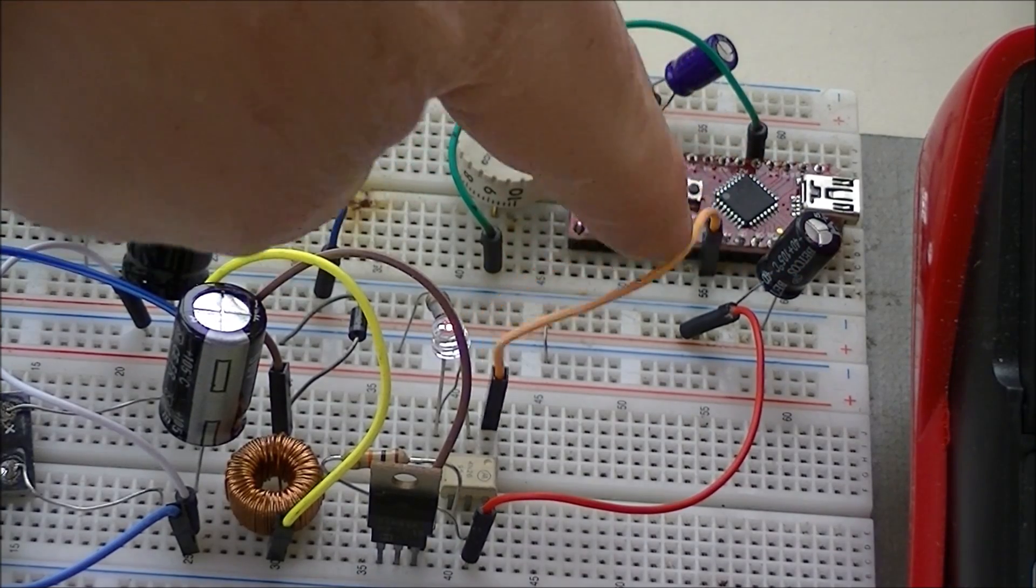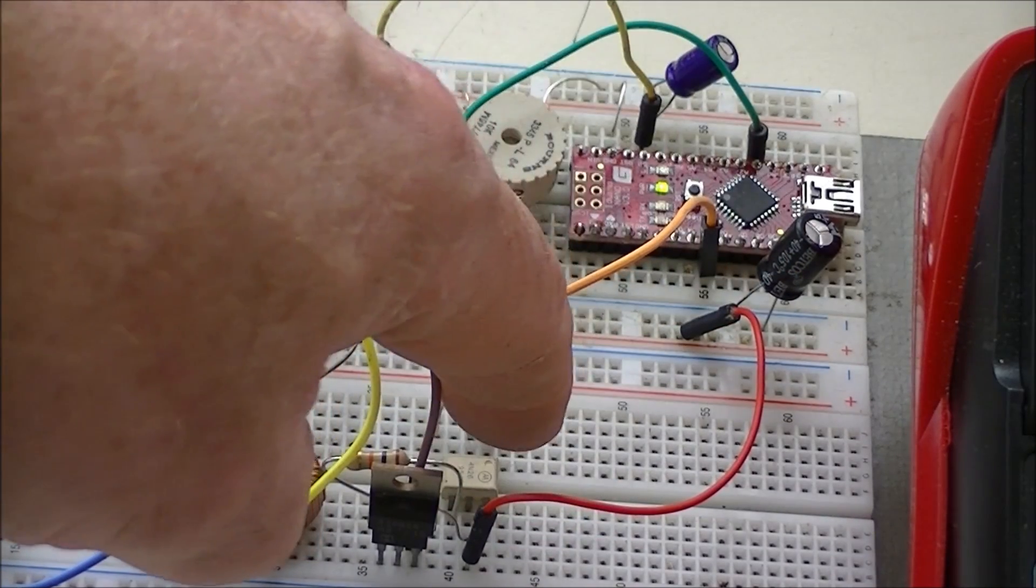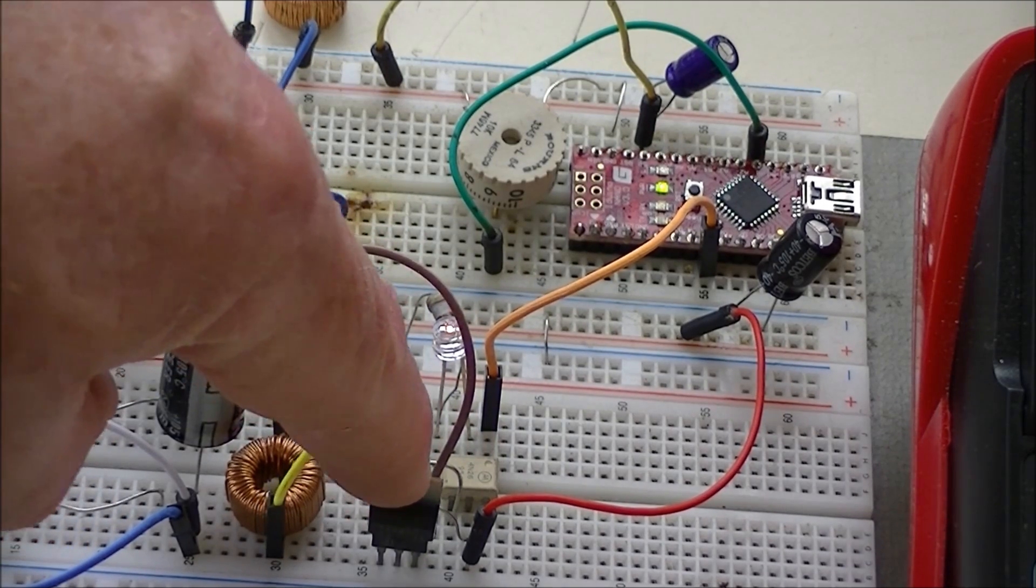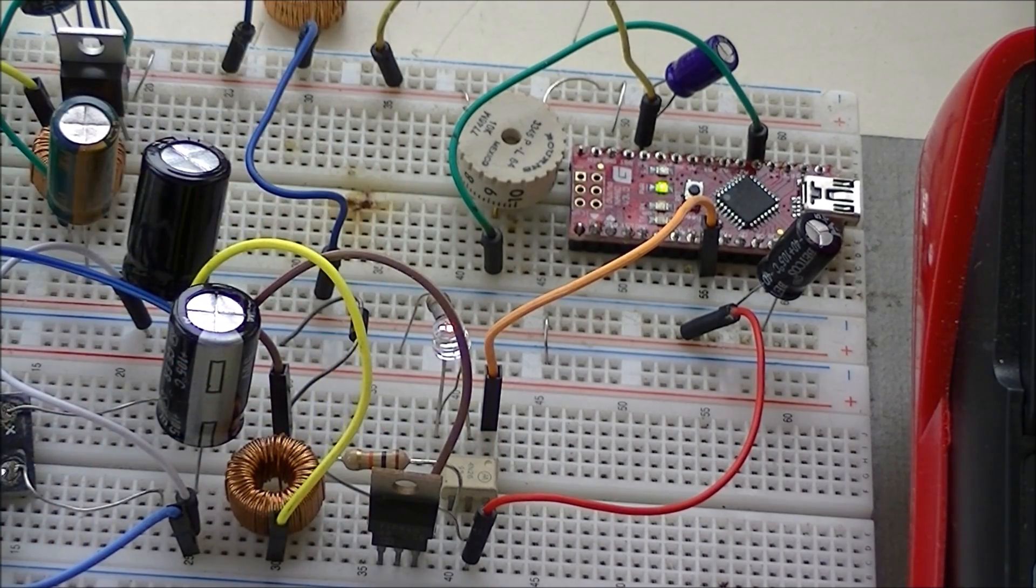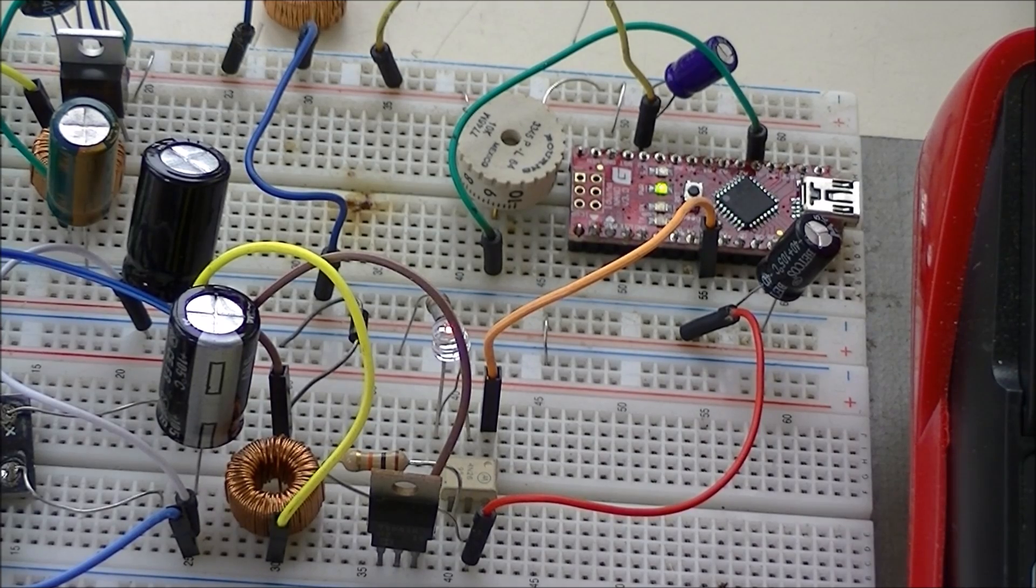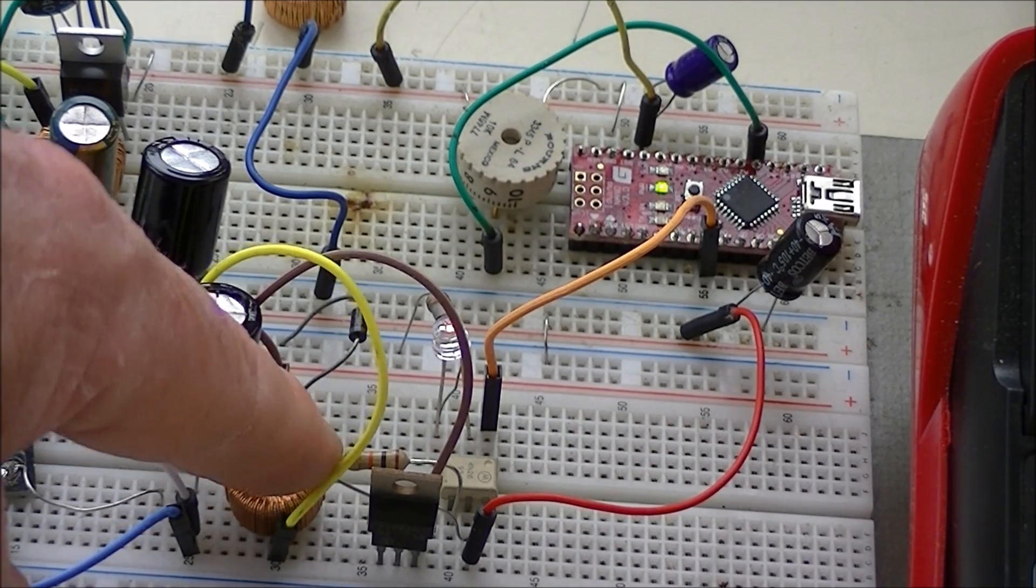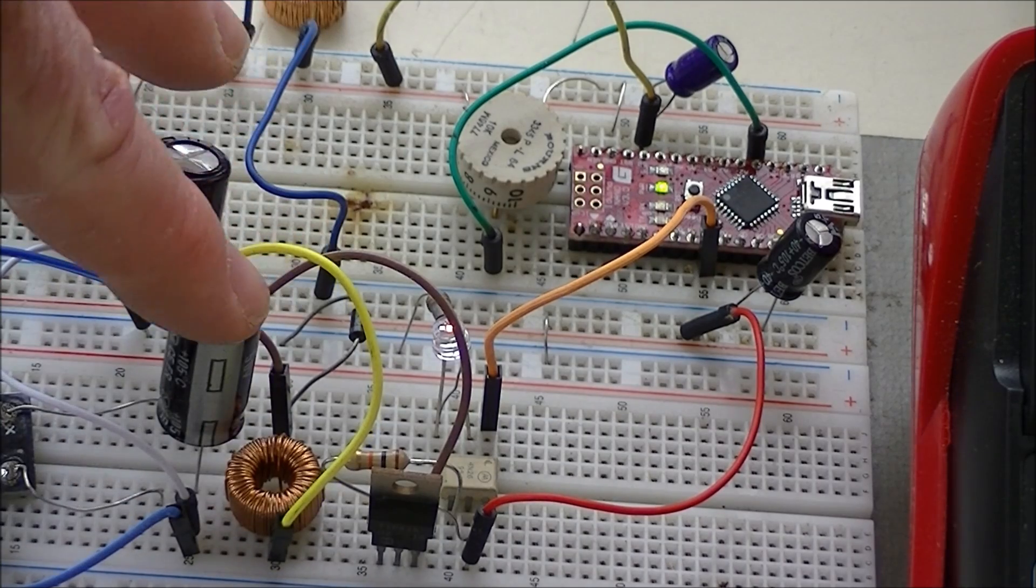The output of the Arduino goes to an optocoupler. This switches on and off an NPN transistor. What this does when the transistor is switched on during the high part of the duty cycle is energy is fed into this inductor and these two caps.